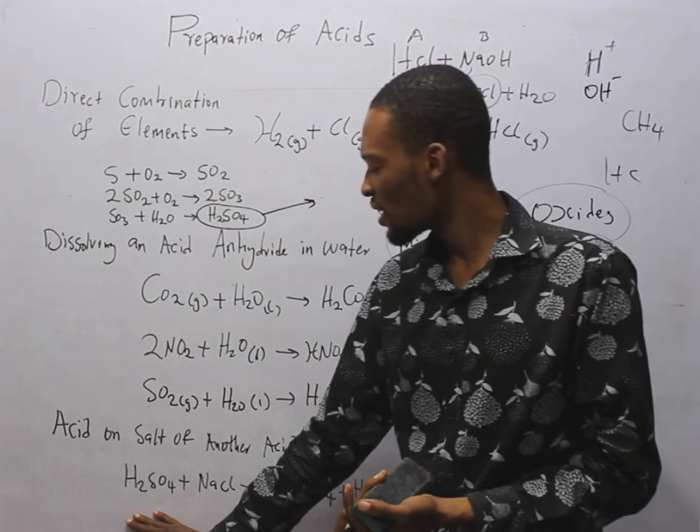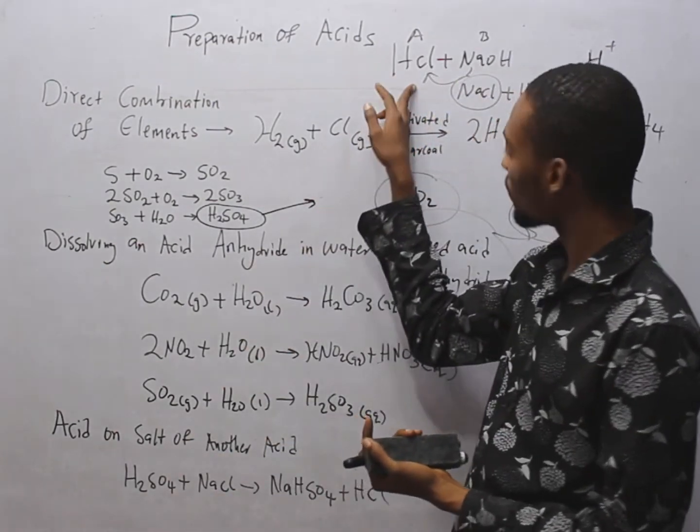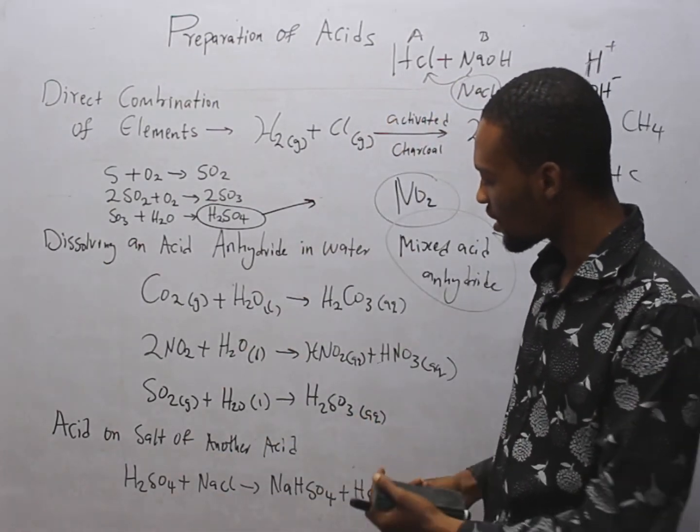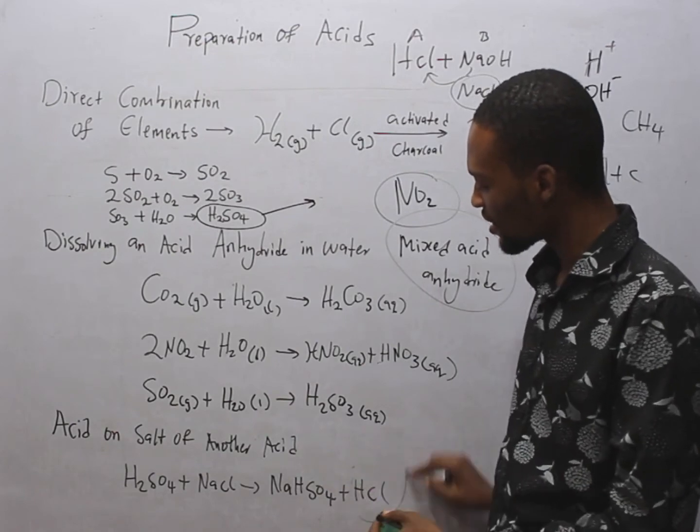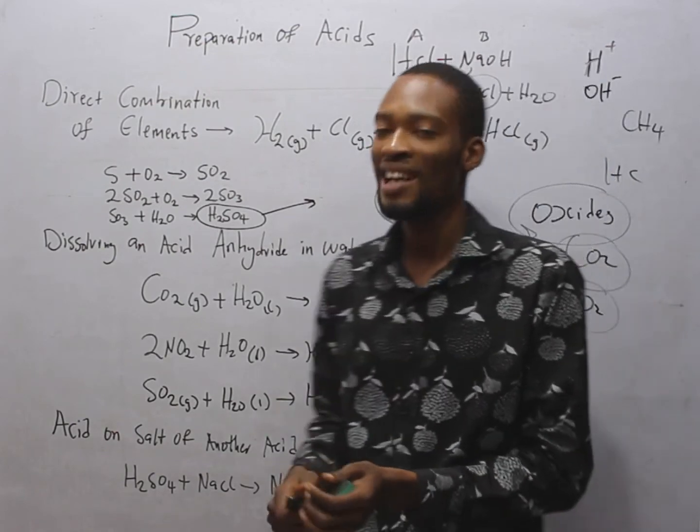So H2SO4, an acid, plus the salt of another acid, salt of HCl, gives you HCl, hydrochloric acid. So these are the three ways we prepare acid.